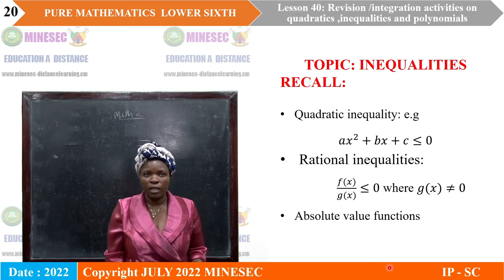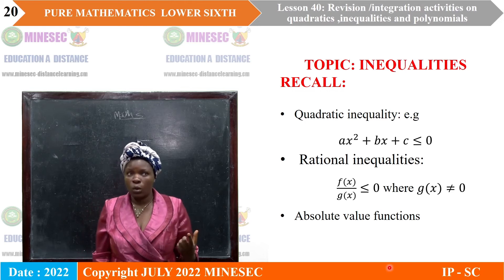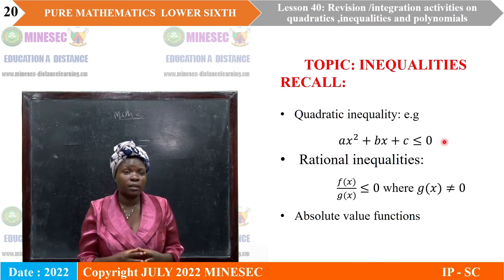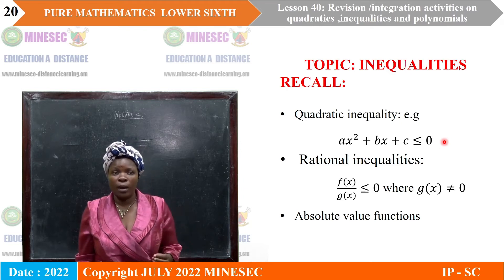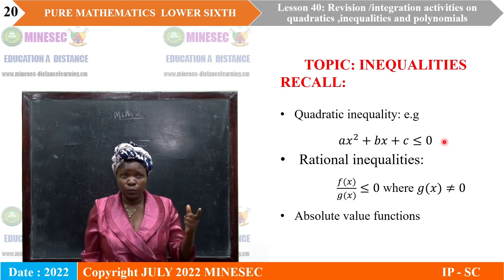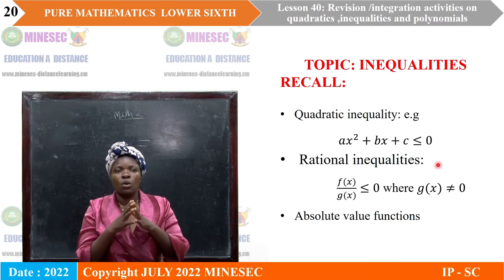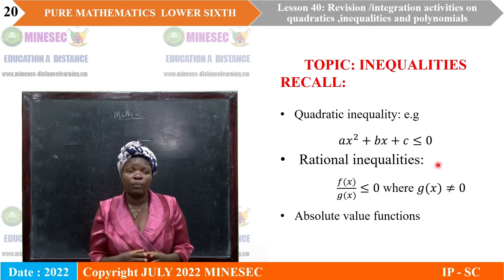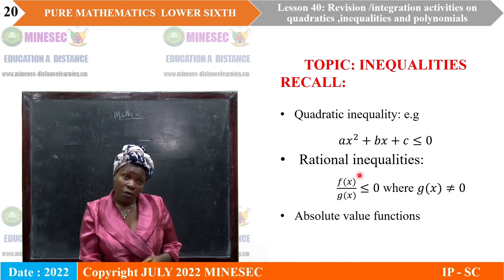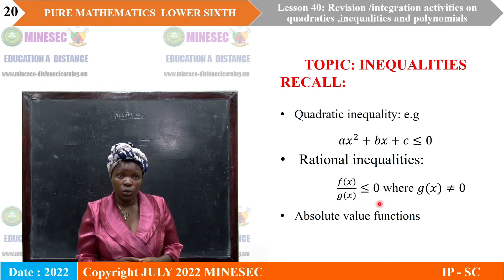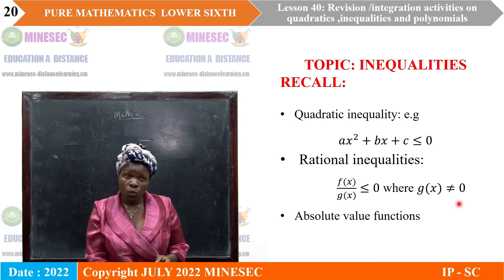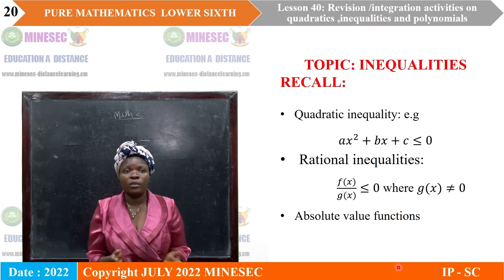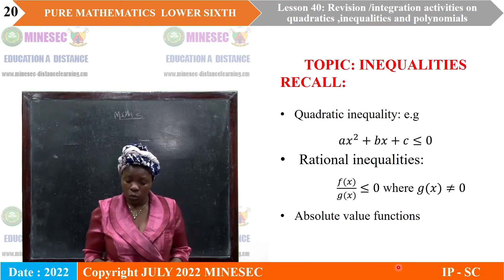Moving to the next topic: inequalities. Recall that a quadratic inequality in general form is ax squared plus bx plus c less than or equal to zero. We also have rational inequalities of the form f(x) over g(x) less than or equal to zero, where g(x) is not equal to zero. We also need to recall the absolute value function and its definition.